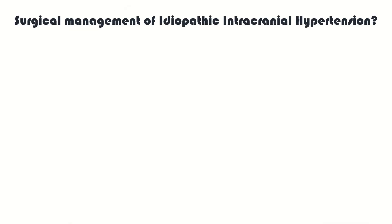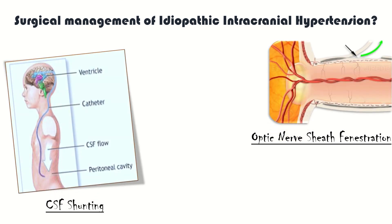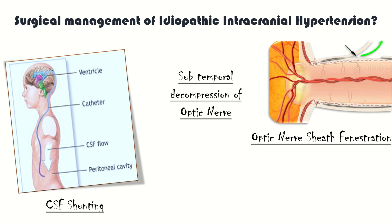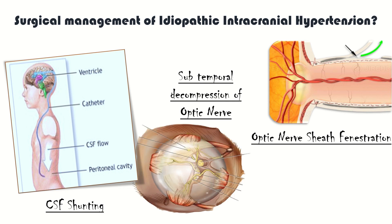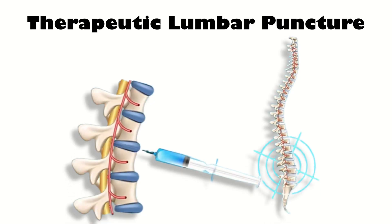Surgical treatment options include optic nerve sheath fenestration and CSF shunting via lumboperitoneal and ventriculoperitoneal routes. Subtemporal decompression of the optic nerve can be considered in complex cases. Repeated lumbar puncture is safe and can be performed at any time during pregnancy to reduce CSF opening pressure, and has been proven to improve visual symptoms and headache.